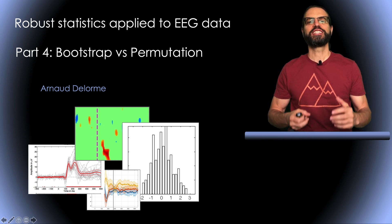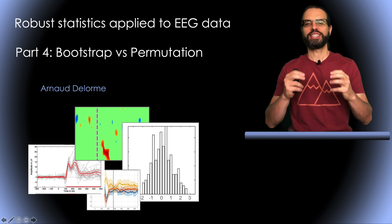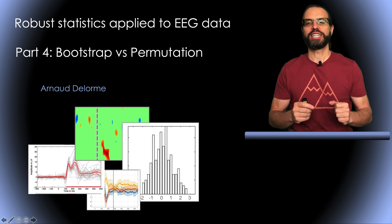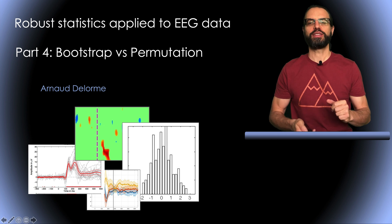Hello, my name is Arnold Delorme, and this is a series of videos on robust statistics applied to EEG data. This is part 4, which is about the difference between bootstrap and permutation.